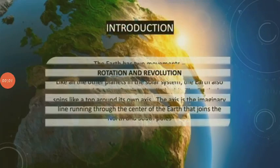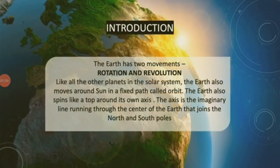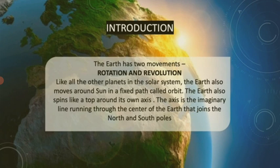Our Earth is in constant motion. It has two movements: rotation and revolution. Like all the other planets in the solar system, the Earth also moves around the Sun in a fixed path called orbit.